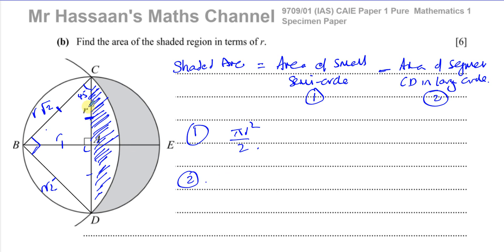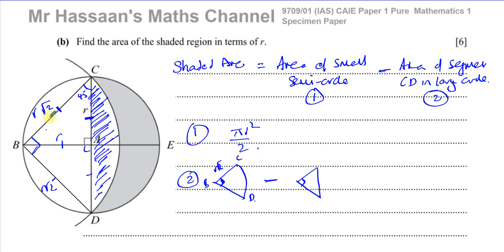The area of the segment equals the area of the whole sector BCD minus the area of the triangle. The sector is like the pizza slice. Remember, this angle is 90 degrees, which is π over 2 radians, and the radius is R root 2. So we take the area of the sector minus the area of this triangle, and we're left with the area of the segment.